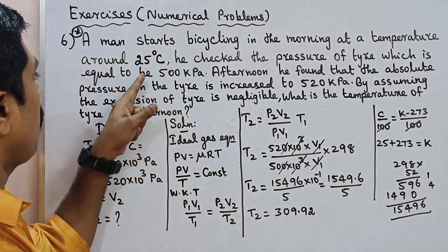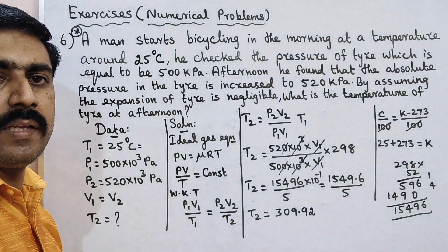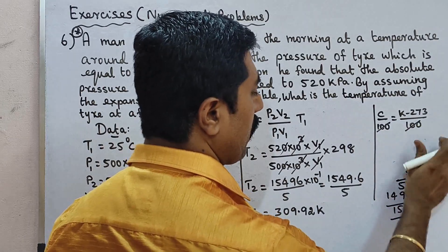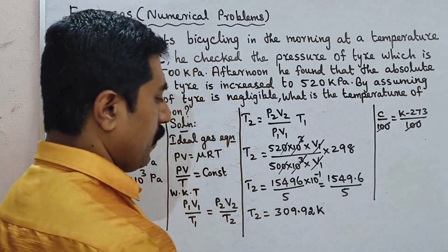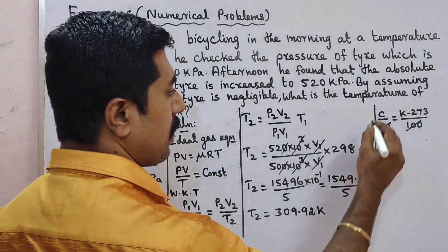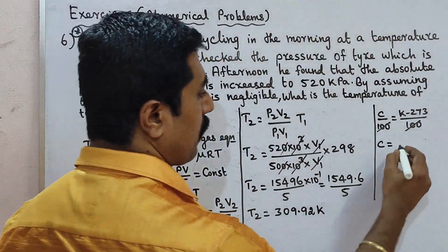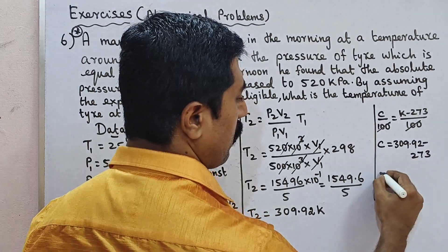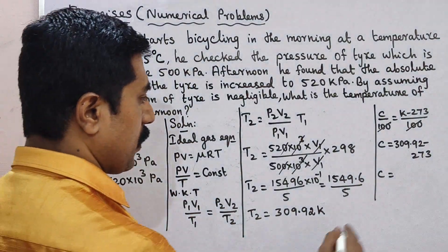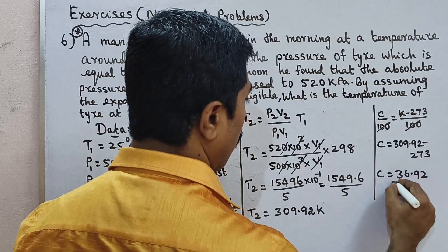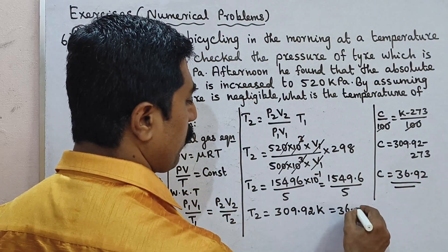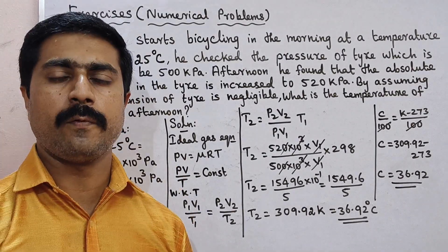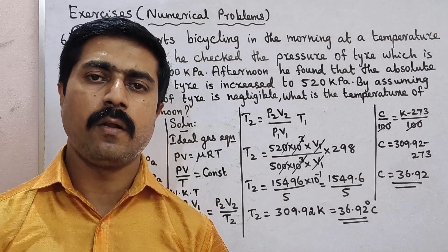The temperature in Kelvin needs to be converted to degrees Celsius. Using the formula: Celsius equals Kelvin minus 273. So T2 in Celsius equals 309.92 minus 273, which equals 36.92 degrees Celsius. That is the answer — 36.92°C. It is a very good problem. You can practice and share with your friends. All the best, thank you!